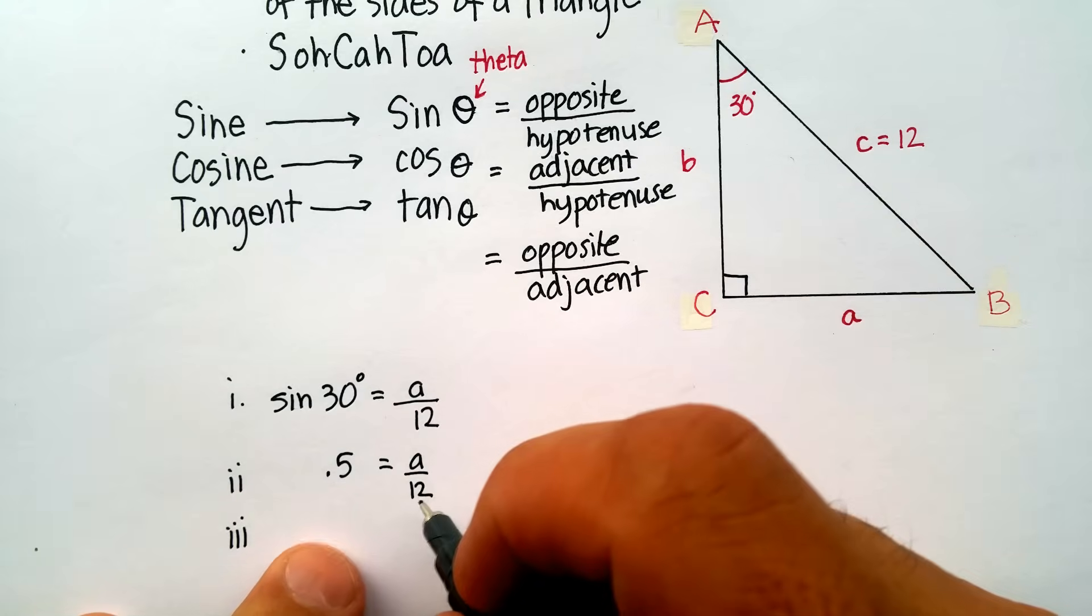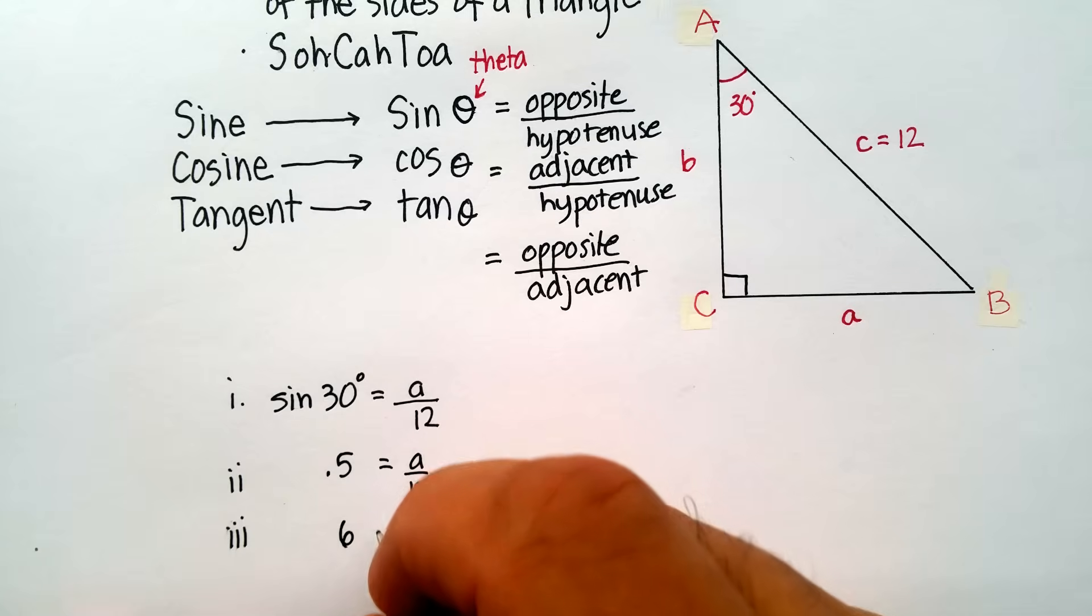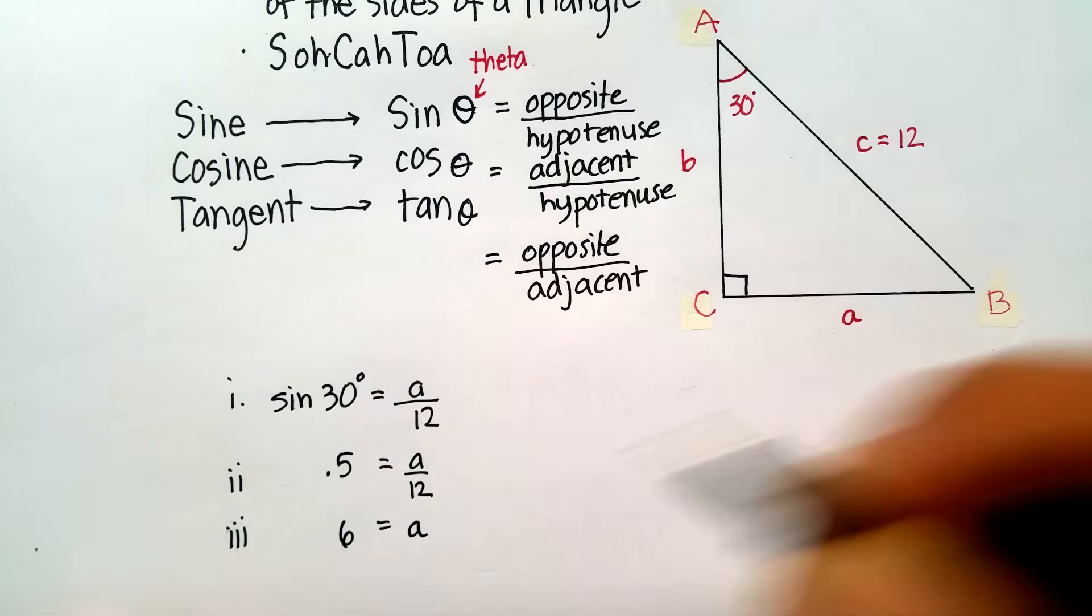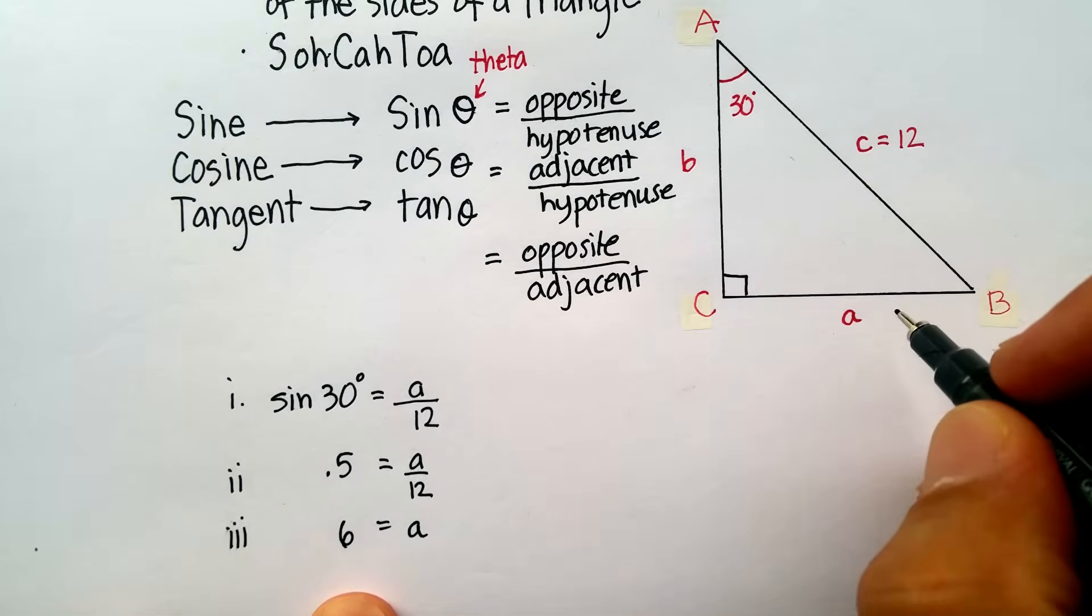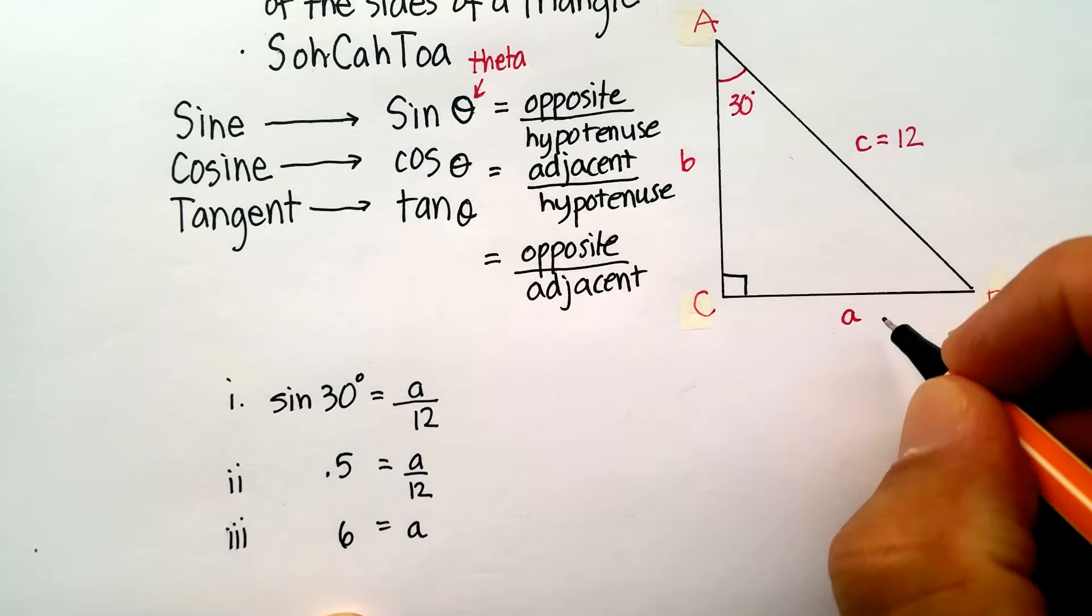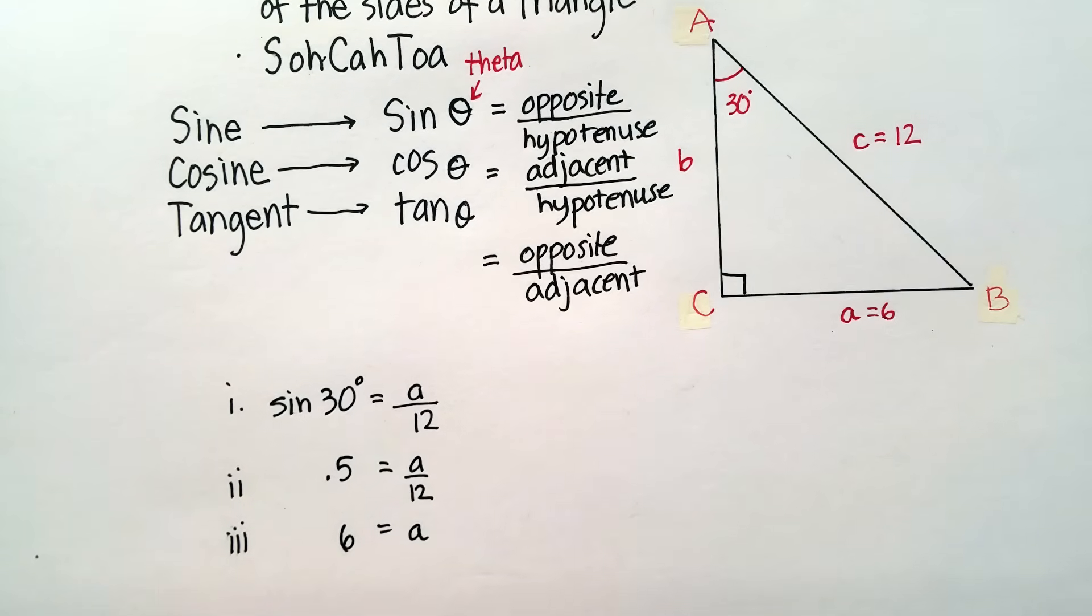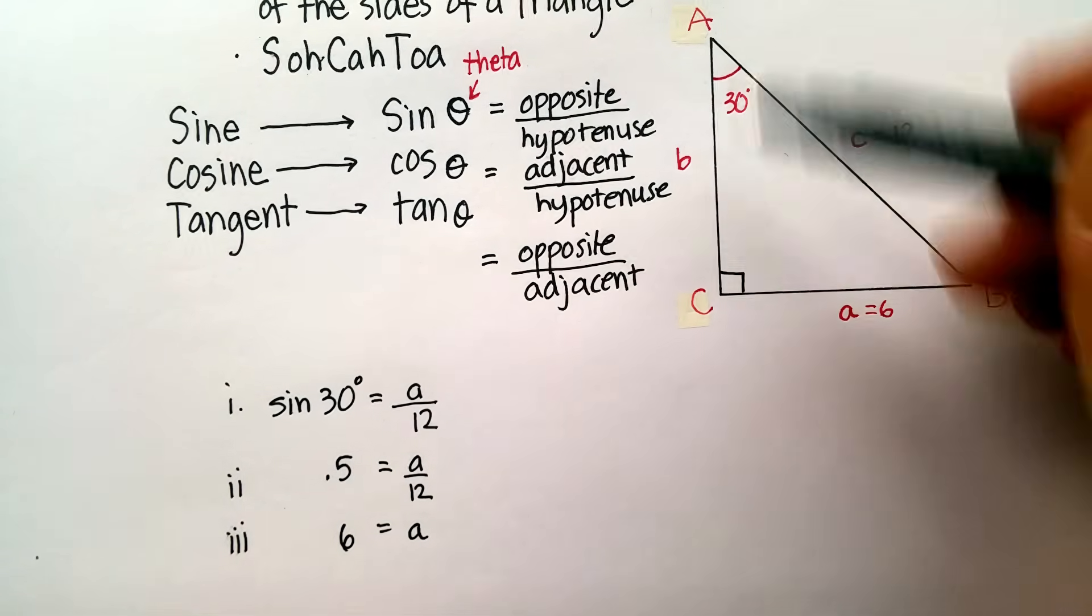Move that over there. Multiply both sides by 12, and I get 6 is equal to A. So now I can start filling my numbers in. I know that A is equal to 6.